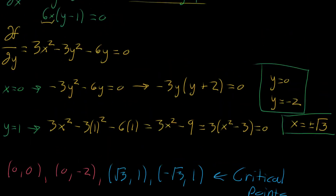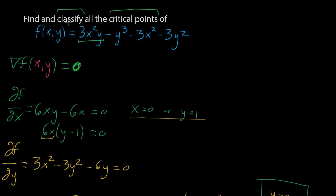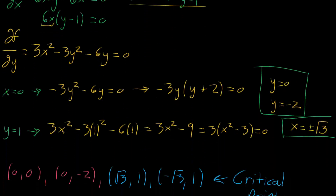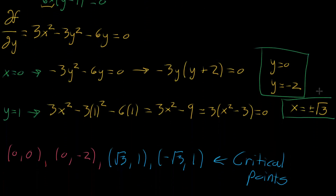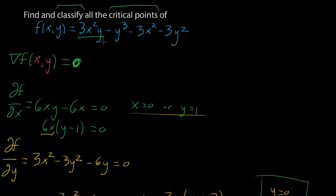In the last video, we were given a multivariable function and asked to find and classify all of its critical points. Critical points means finding where the gradient is equal to zero, and we found four different points: (0,0), (0,-2), (√3, 1), and (-√3, 1). The next step is to classify those, and that requires the second partial derivative test.